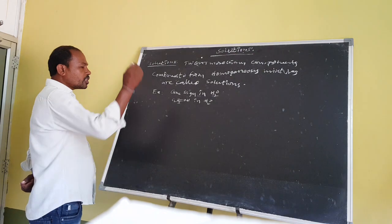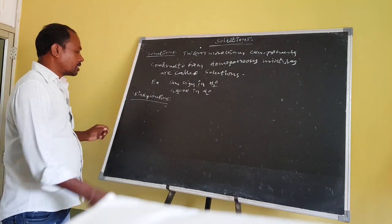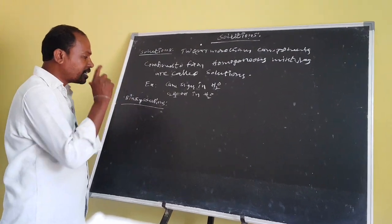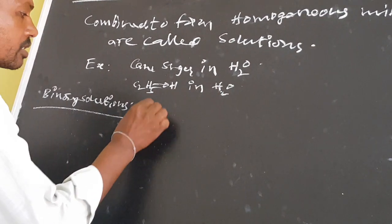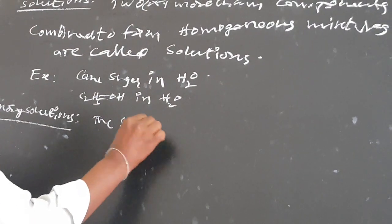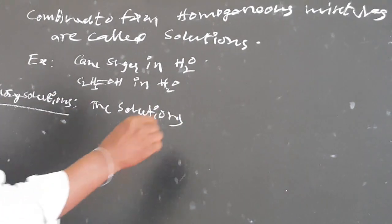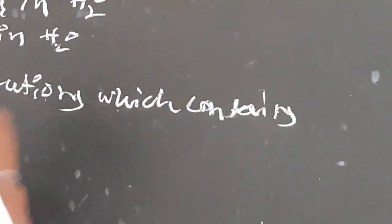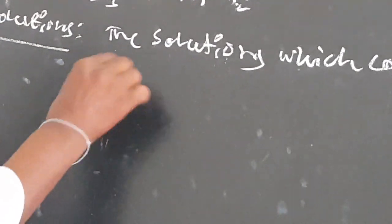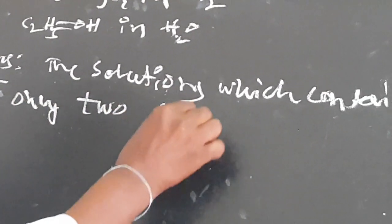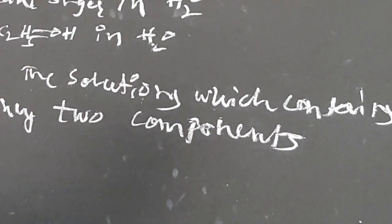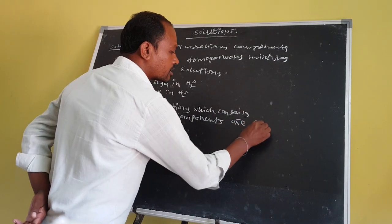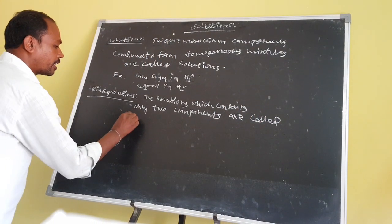Next, we discuss about binary solutions. What are binary solutions? Binary solutions means the solutions which contain only two components. The solutions which contain only two components are called binary solutions.